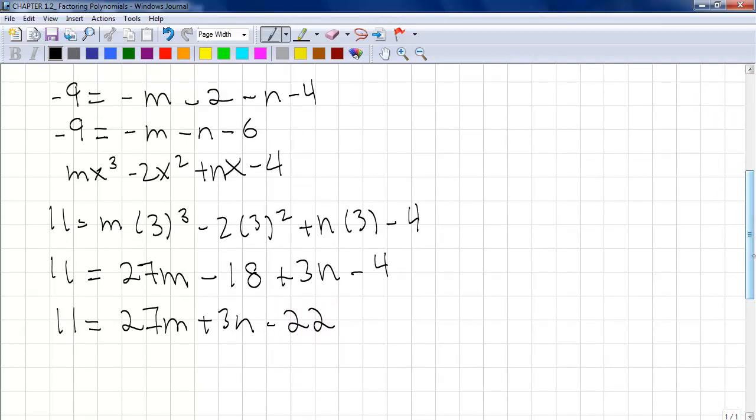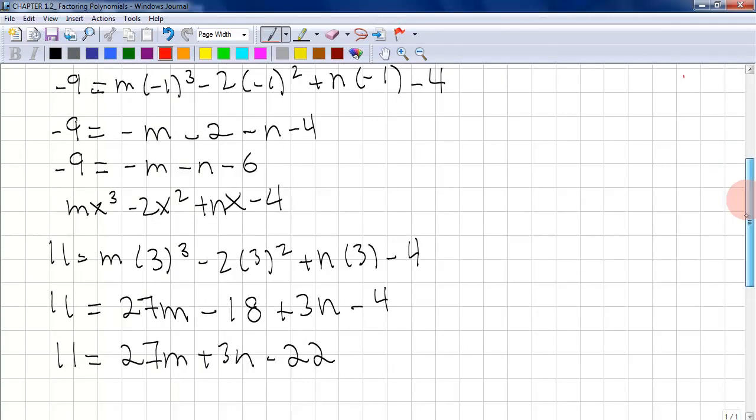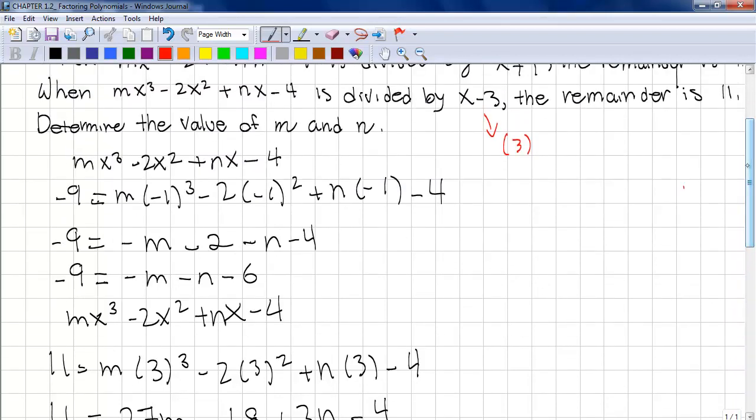What we want to do now is from either of these equations, we want to isolate either m or n so later on we can substitute it in the other equation. Let's work with the easiest equation to isolate, the first one. What we can do is isolate the m. So we put -9 + m equals -n - 6. We want to move this -9 to the right side so the m is isolated. So it'll be m, -9 minus 6 plus 9. And -6 plus 9 is 3. So it will be m equals -n + 3.